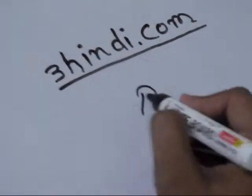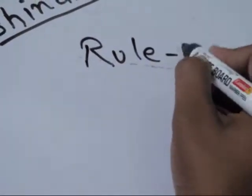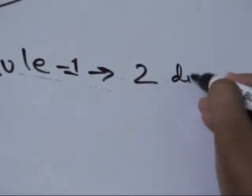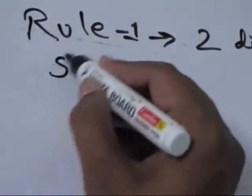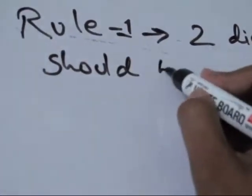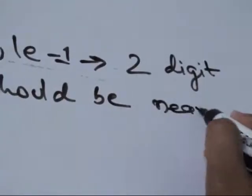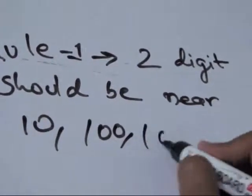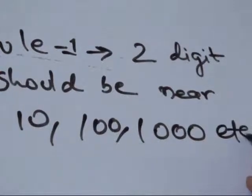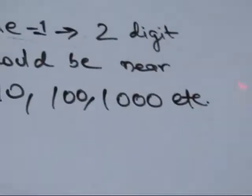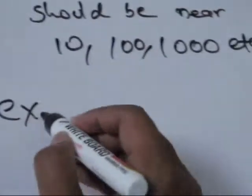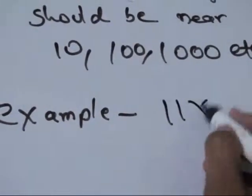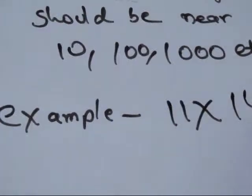Now I will show you how to multiply two numbers very fast. The first rule for fast multiplication is that the two numbers to be multiplied should be near to ten, hundred, or thousand. This rule is only for those digits which are near to ten, hundred, or thousand. So remember this rule first. The second rule: the example is eleven into fourteen.